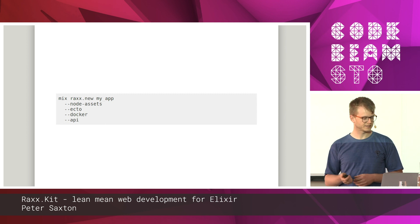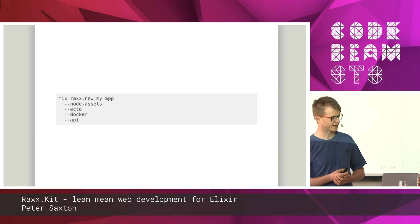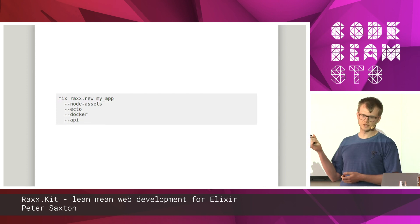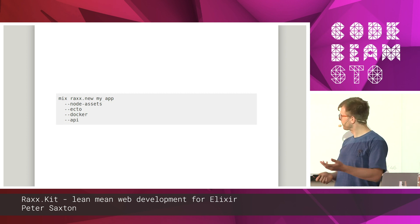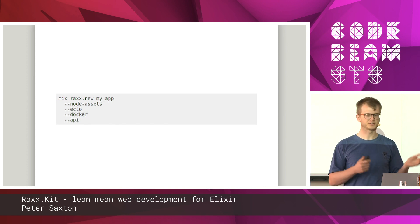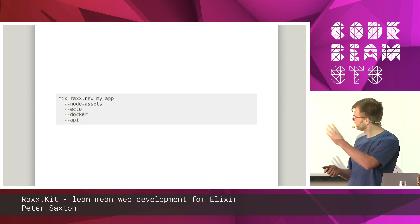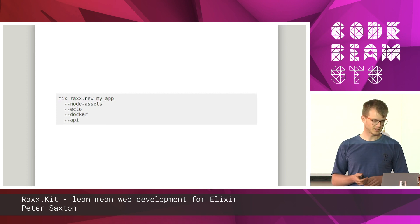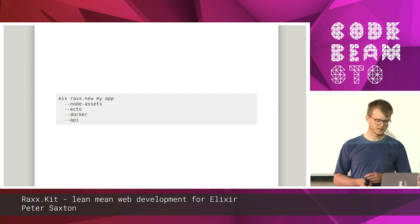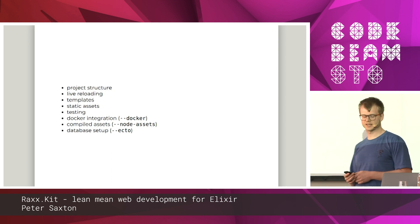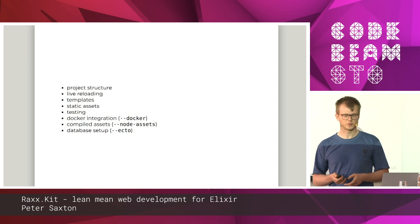All of these compose nicely. If you use the Docker and the Ecto flag, the database is set up inside Docker, then the Docker Compose file is set up, and Ecto uses environment variables to find the database. You can opt into as much as you want from the framework or toolkit. The aim is to get you started quickly, same as a framework. You get a project structure, library loading, templates, static assets — all of these good things.